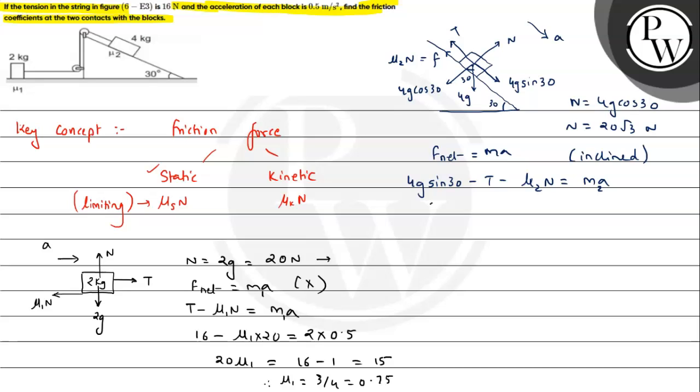So here we can write value 4 into 10, that's 40. 40 sin 30 is half, so here we have 20 minus 16 T given, and μ2 here. N we have already found, that is equals to 4 into 0.5.